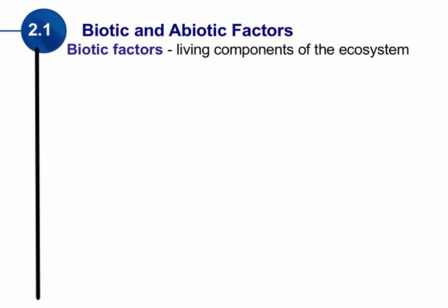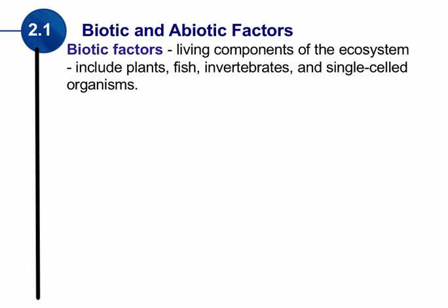Biotic factors are all of the living components in an ecosystem — things that are living, such as plants, fish, invertebrates, or even a single-celled organism. When considering biotic factors, we also have to consider things that were once living, such as a leaf or a branch. They came from something living; they may be dead, but they were once living and are considered biotic factors.